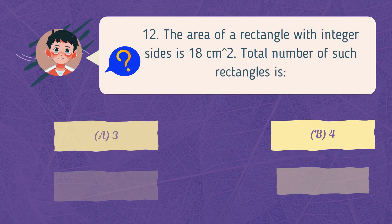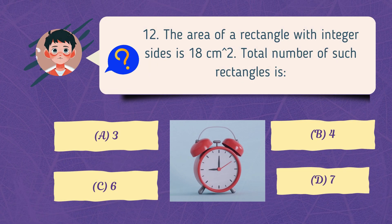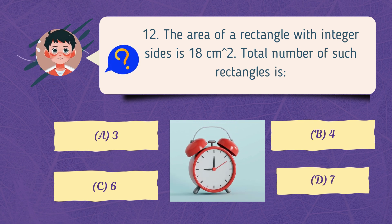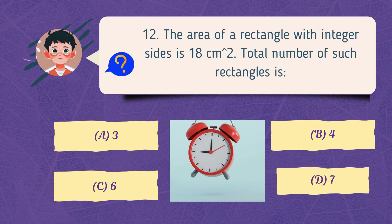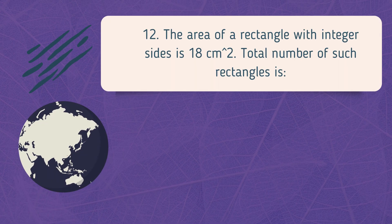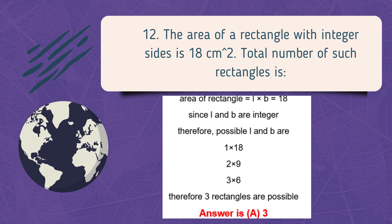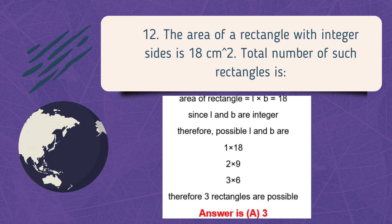The area of a rectangle with integer sides is 18 square centimeters. Total number of such rectangles is?